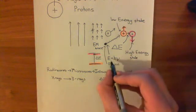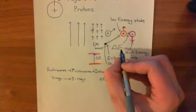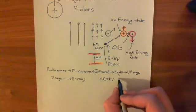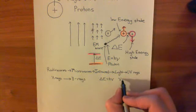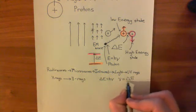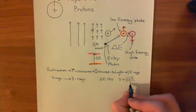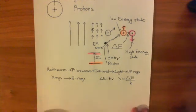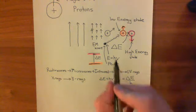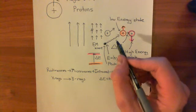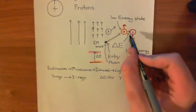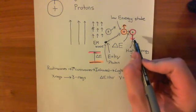All you need to do is say the photon's energy needs to equal this energy difference. Therefore, h·ν needs to equal ΔE. So the frequency of the radiation needs to equal the energy difference between these two states divided by Planck's constant. If you fire that correct frequency of electromagnetic radiation at the proton, it will then transition up into the higher energy state.